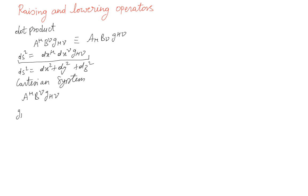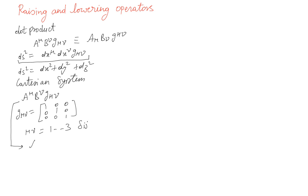For a Cartesian system, g_mu_nu is given as the identity matrix — ones on the diagonal and zeros elsewhere. You will see that this gives nothing but A_x B_x + A_y B_y + A_z B_z. These are just numbers and not really covariant vectors in any nontrivial sense.